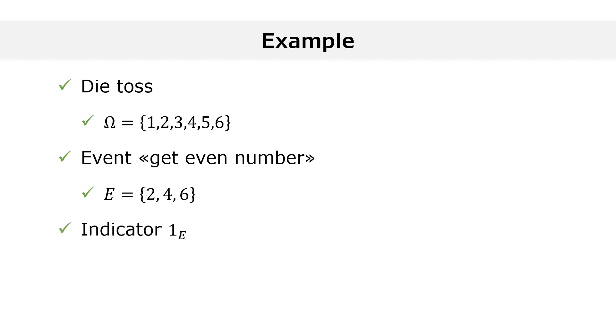The indicator one sub E can be defined by cases. One sub E of omega is equal to one if omega is equal to two, four, or six. One sub E of omega is equal to zero if omega is equal to one, three, or five.